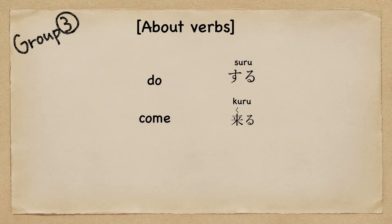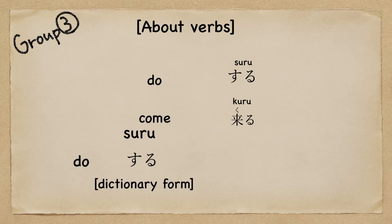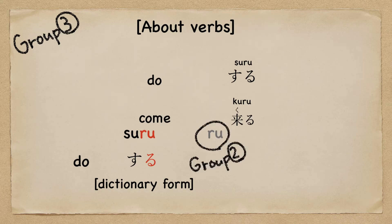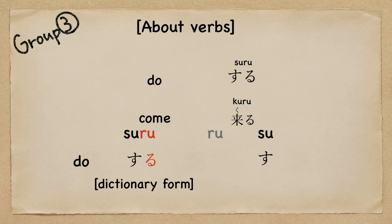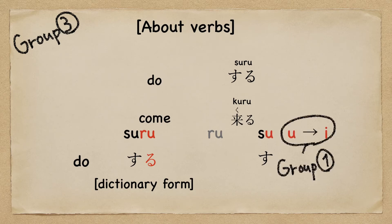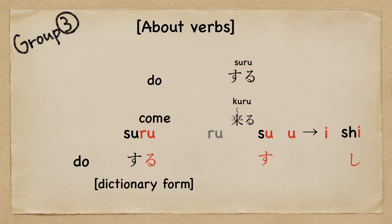How to make the masu form? 'Suru' is the dictionary form. First, throw away 'ru' like Group 2. Then 'su', and 'u' changes to 'i' like Group 1. So 'su' becomes 'shi'. 'Shi' is the masu stem — shi, masu.